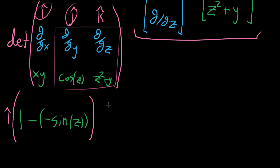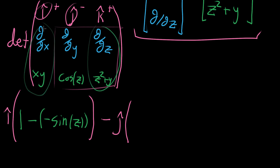For the next part, we subtract j multiplied by its own sub-determinant, using the columns it's not part of. We take the partial derivative with respect to x of z squared plus y — no x's appear there, so that's zero. Then we take the partial with respect to z of x times y — no z appears there either. So that's also zero. We're subtracting off zero, so the j component contributes nothing.